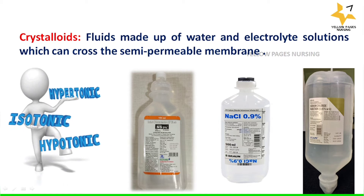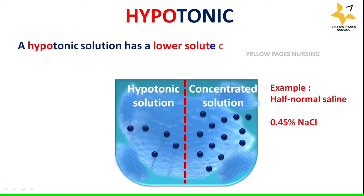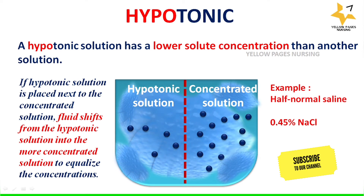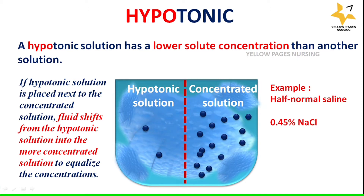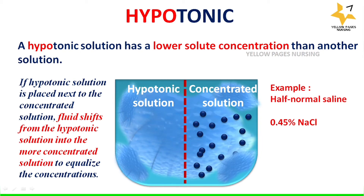First comes hypotonic solution. As the name suggests, a hypotonic solution has a lower solute concentration than another solution. By placing a hypotonic solution and a concentrated solution closer, fluids from the hypotonic solution shift to the concentrated solution to equalize the concentration. An example of a hypotonic solution is half normal saline, that is 0.45% normal saline.